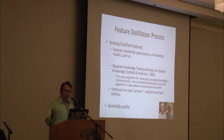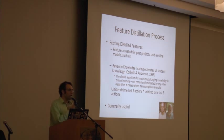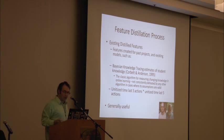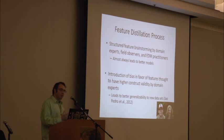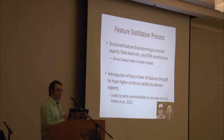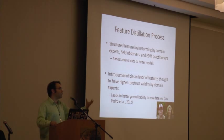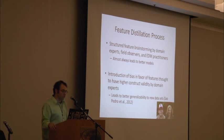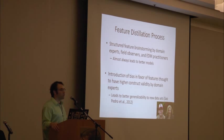We built on this with existing features created for past projects, things like Bayesian knowledge tracing — a classic algorithm for telling what a student knows while that knowledge is actually changing while it's being measured. We also started doing structured feature brainstorming by domain experts, field observers, and EDM practitioners. This looks a lot like some early stages of evidence-centered design thinking. When we really bring in many stakeholders to think about what behaviors should reflect what we're looking for, it leads to better models. Introducing bias in favor of features that domain experts think will have higher construct validity leads to better generalizability on new data sets.